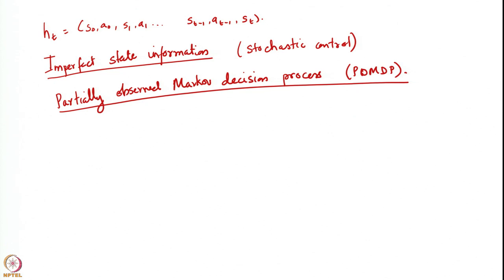Our model is as follows. The system has a state, and it evolves as x_{k+1} = f_k(x_k, u_k, w_k), where x_k is the state at time k, u_k is the action, and w_k is the noise.